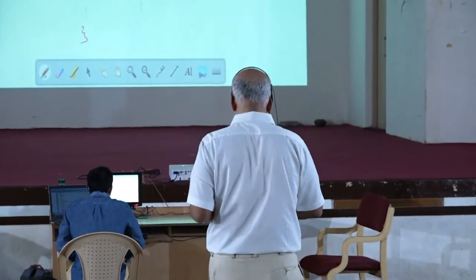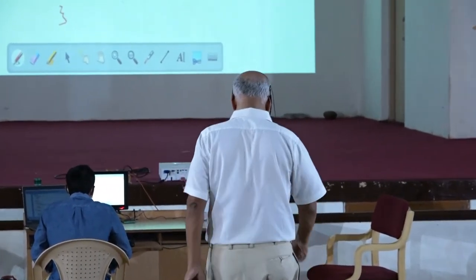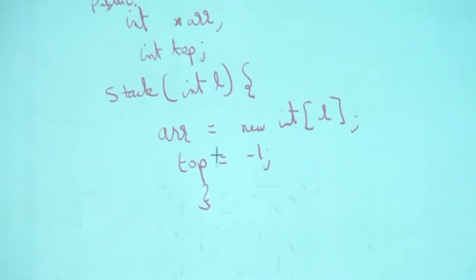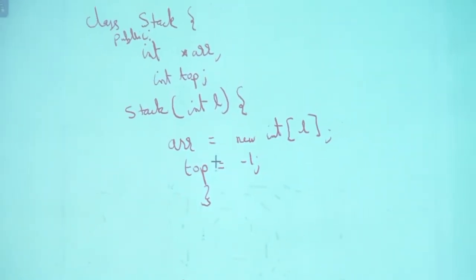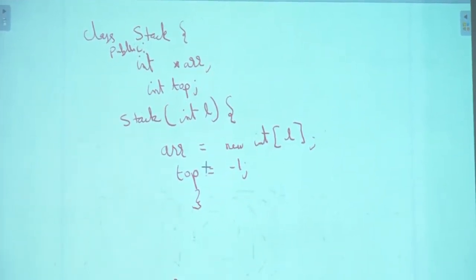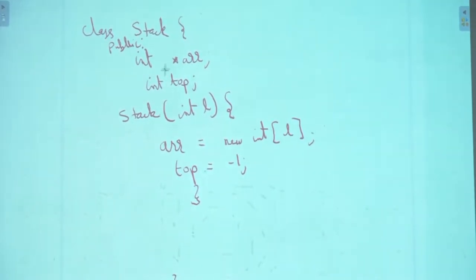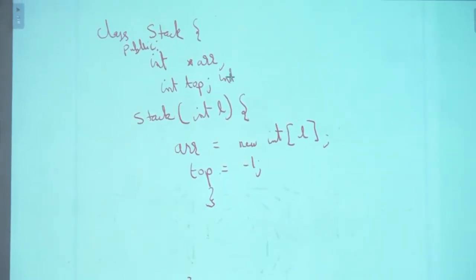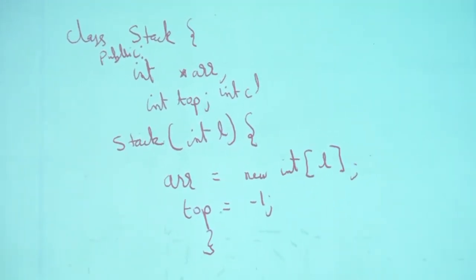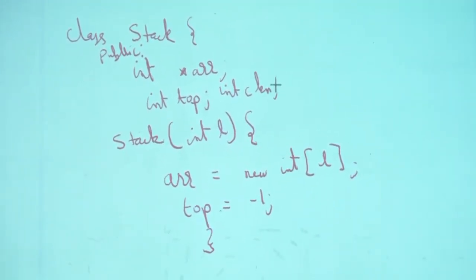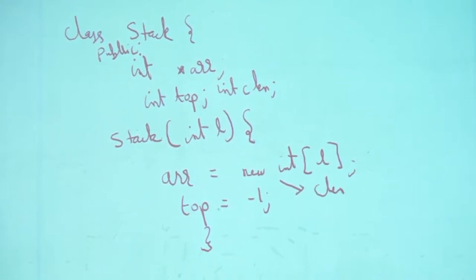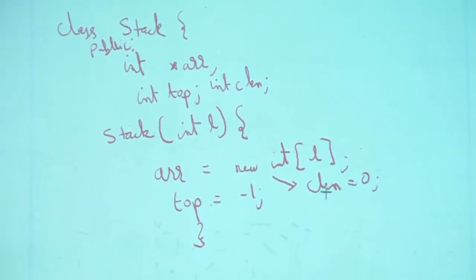Let's add the variable int cLength — current length — which will keep track of how many elements are actually being used. In the constructor I will set cLength = 0.